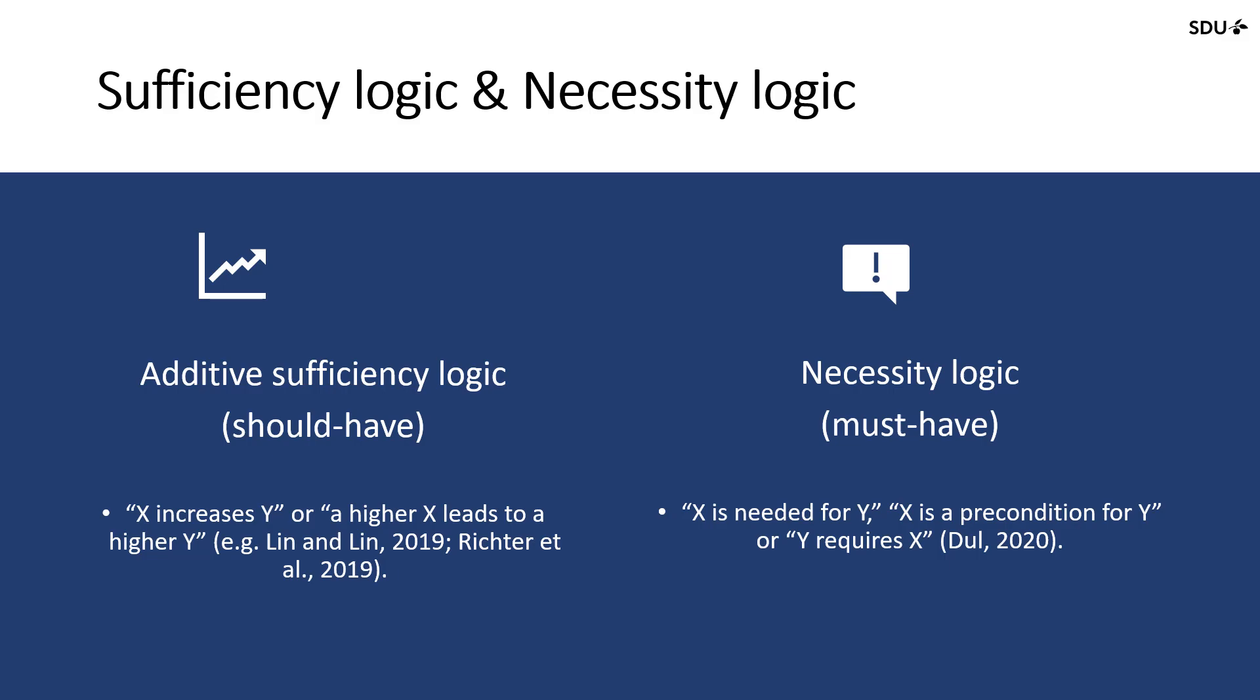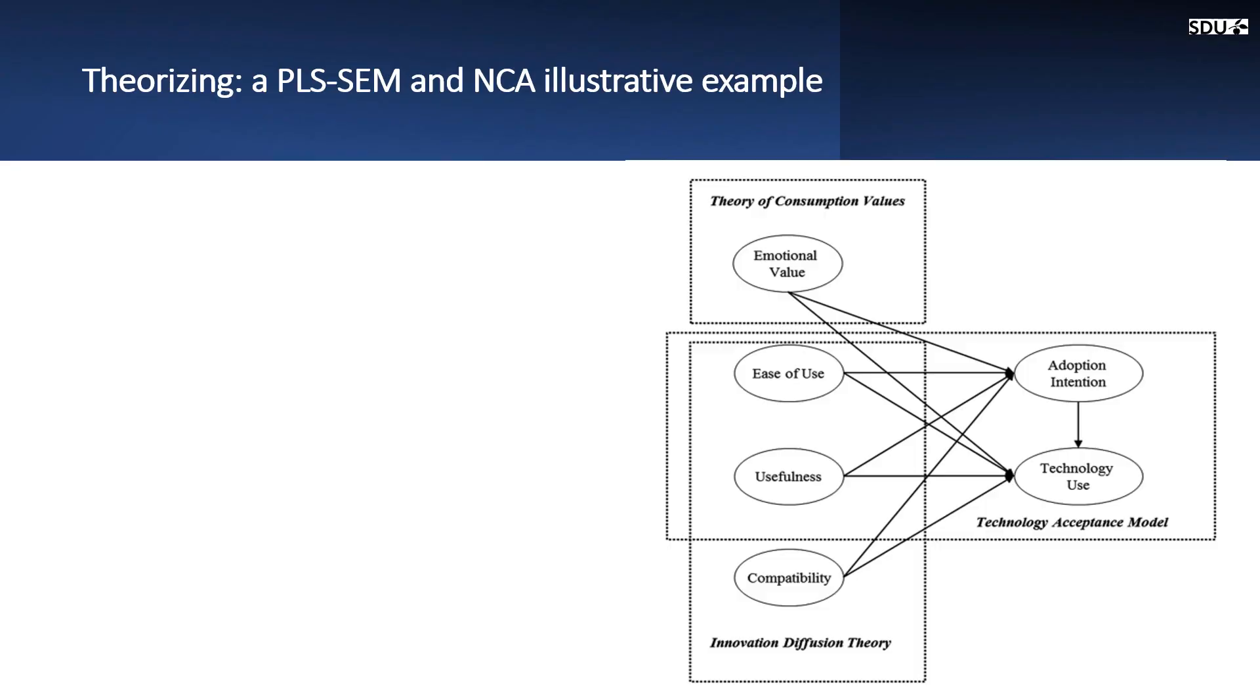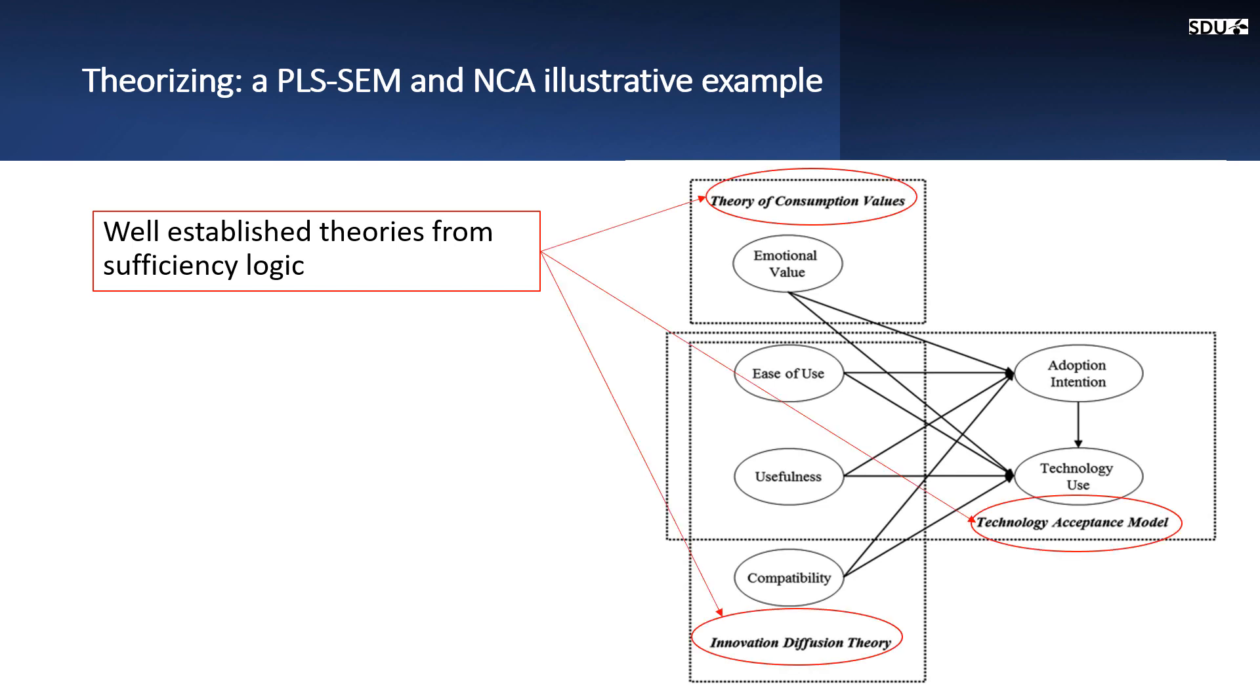Here we can show you an example. This is a structural model and we can see that there are a lot of well-established theories for sufficiency logic. For example, the theoretical framework behind the emotional value is the theory of consumption value. The ease of use, usefulness has technology acceptance model. And then these three, we have innovation diffusion theory.